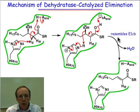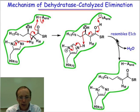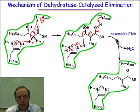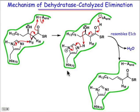This resembles the E1CB elimination mechanism where we've made a deprotonation reaction first. We actually did that in this case by not making the enolate anion, but instead we made this enol-like derivative here.